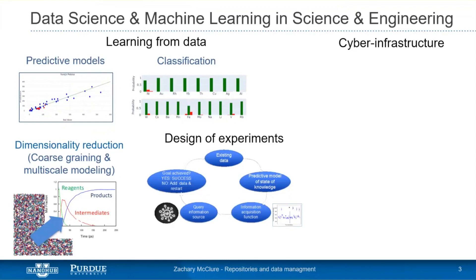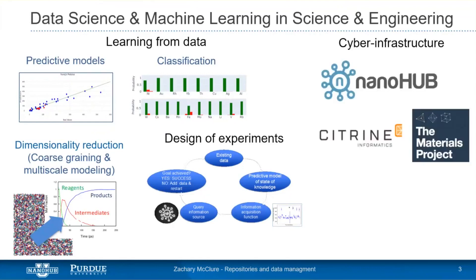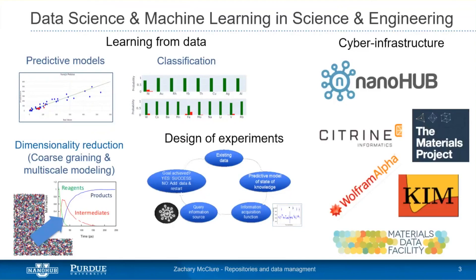That's where cyber infrastructure comes in. NanoHub is one pushing and developing tools and models for researchers worldwide. There are other repositories like the Materials Project, Citrine Informatics, and OpenCIM that allow people to access data through quick, easy-to-use APIs — many based on simple Python scripting. Today's focus is figuring out what data is out there, how to access it, and how to leverage it with visualization that we can build into predictive models in following sessions.